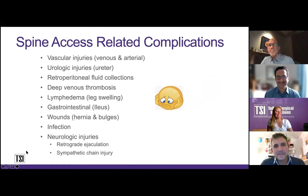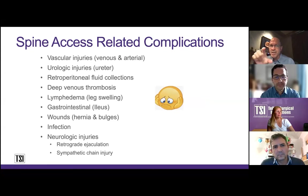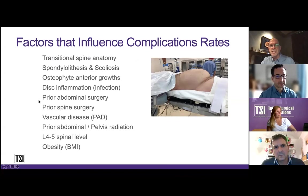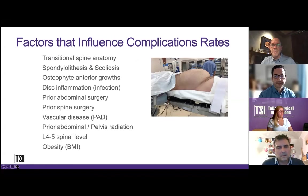I'm not going to go through all access-related complications, but as an approach surgeon, you need to be able to manage and be aware of all of them. The factors that influence increased complications include the L4-5 level with more vascular injury risk, obesity, history of peripheral vascular disease, inflammation, osteophytes, spondylolisthesis, and transitional anatomy. These are all associated with more vascular problems. If you're an approach surgeon early in your career, you're going to get into trouble with these cases — ultimately you'll have to do them, but these are the issues that will increase your complication rate.